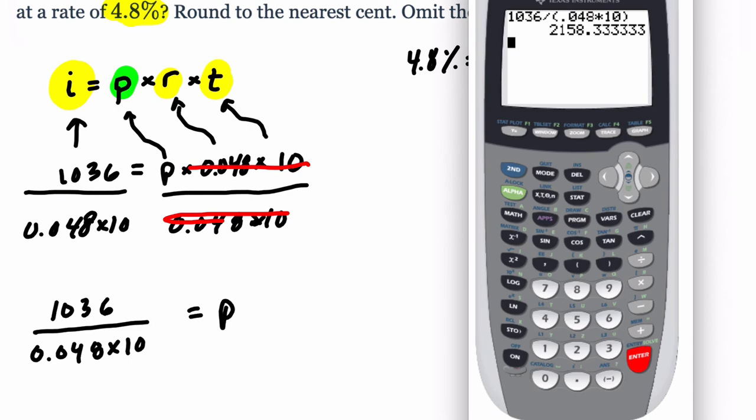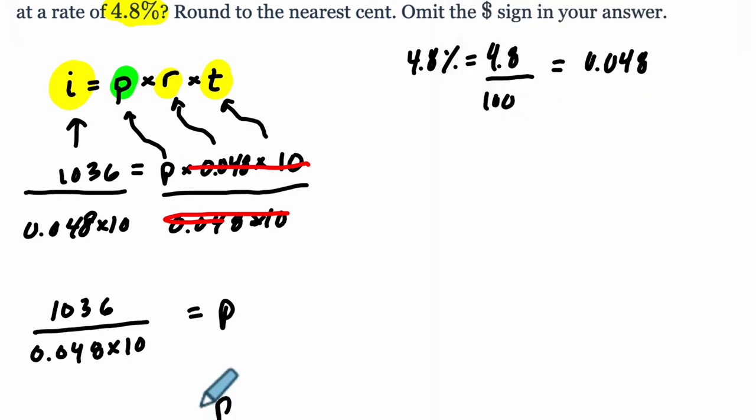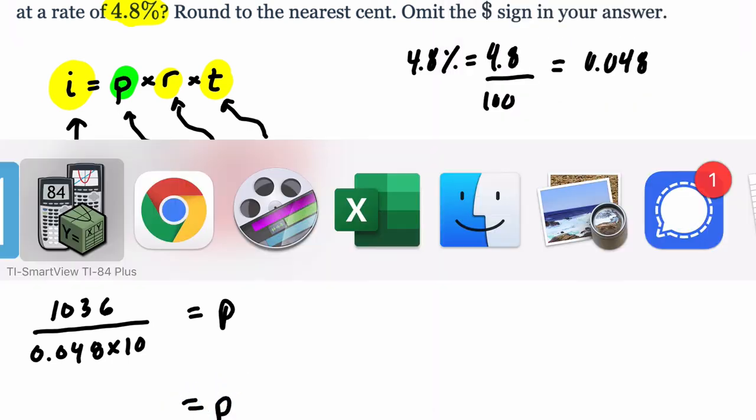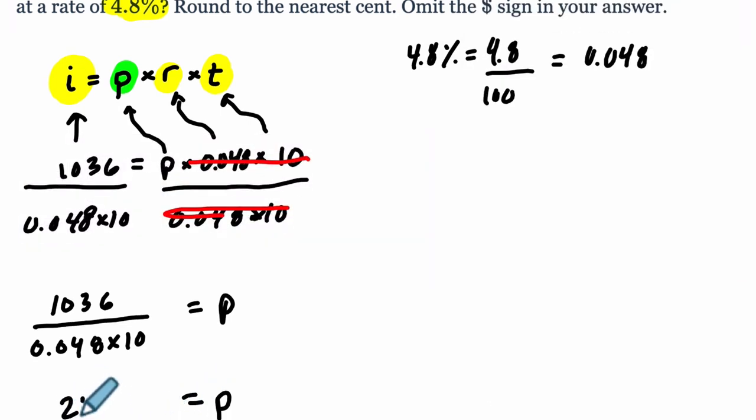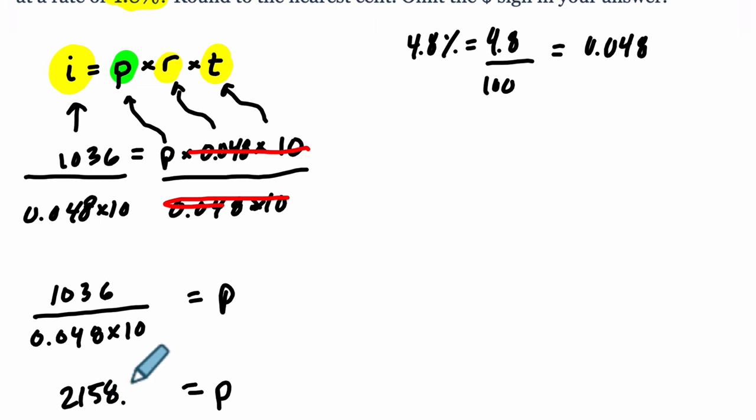So here, what does that mean? It just means that the principle is equal to that number, which I already forgot. 2158.33. So it's just saying if you had this much money in your account and you multiplied it by an interest rate of 0.048 for 10 years, you would get this much simple interest.